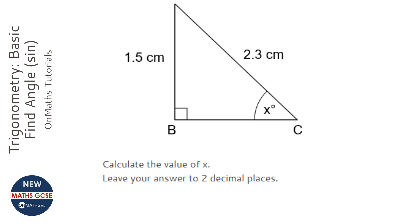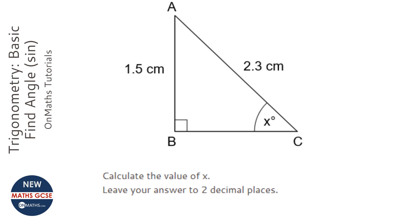OK, so we've got a right angle triangle here, and we're given two lengths, and we're asked to find the angle.